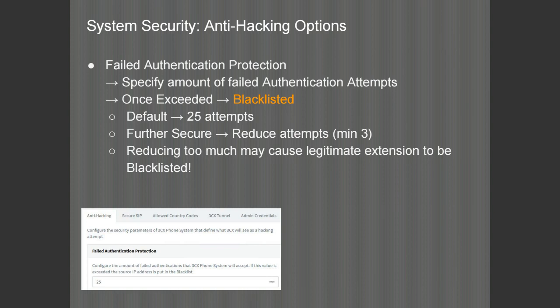Moving on to the anti-hacking options of the PBX. From here, you can specify the amount of failed authentication attempts coming into the PBX before an IP address is blacklisted. By default it is 25 attempts. You can further secure this by reducing the attempt number to a minimum of 3. Please do not put it too low — do not put it to 1, for example, as this will also cause legitimate extensions to be blacklisted as well.